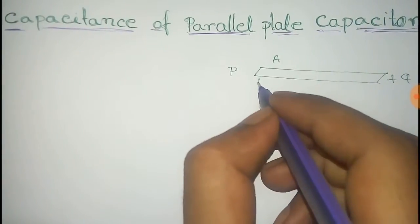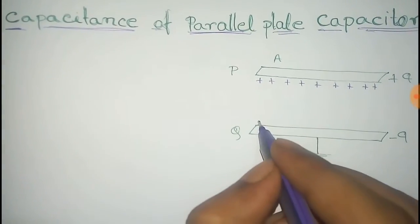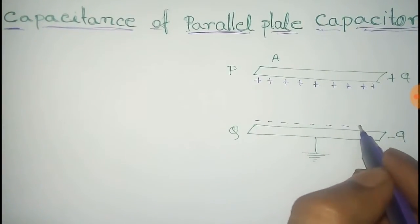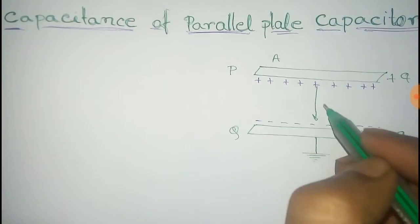So that all are positive charges, and that all are negative charges here. So the direction of the electric field from the positive to negative charges would be like this.